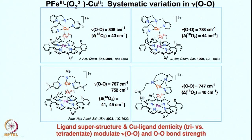For the tetradentate ligand system Naruta obtained a crystal structure — that is clear. For the tridentate ligand system there is no crystal structure so far, neither in enzyme nor in synthetic setups, but scientists were able to show very clearly that a peroxo species is forming between the iron and the copper center. Each center donates one electron to the oxygen moiety to make it peroxo. Interestingly, the oxygen-oxygen stretch in resonance Raman at 767 wavenumbers is consistent with the peroxo species forming.